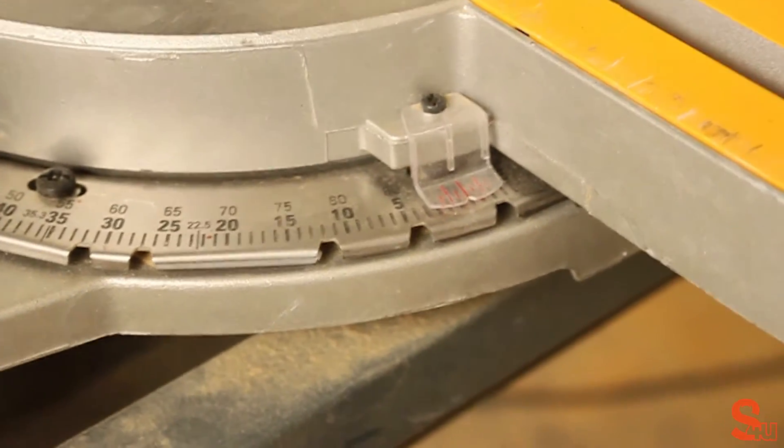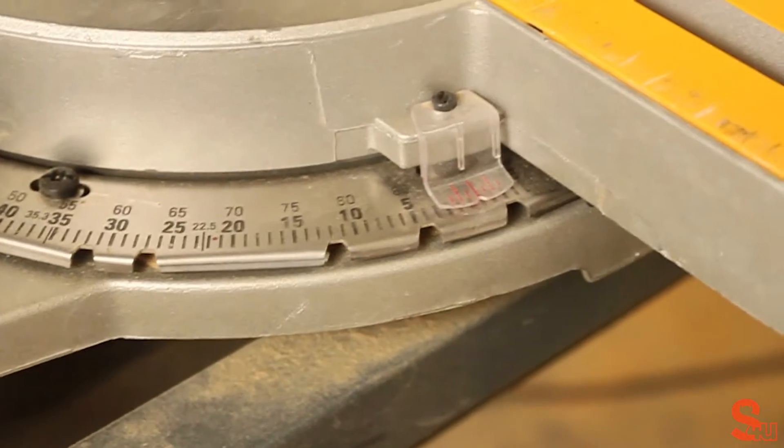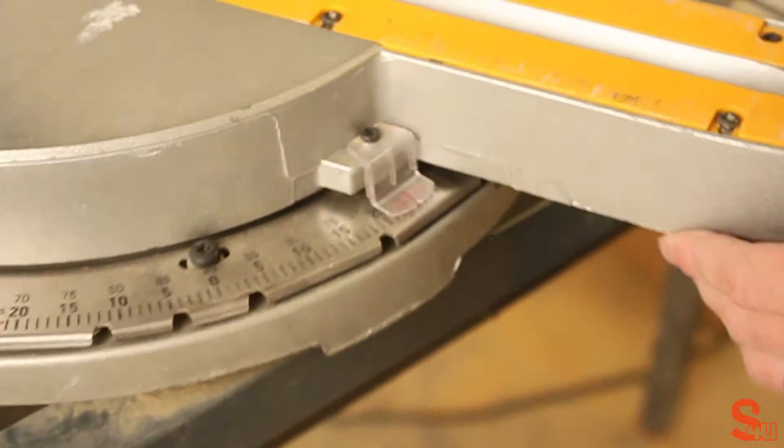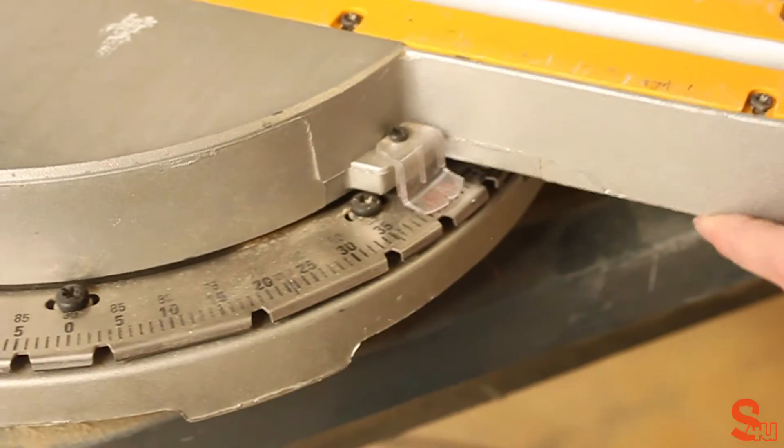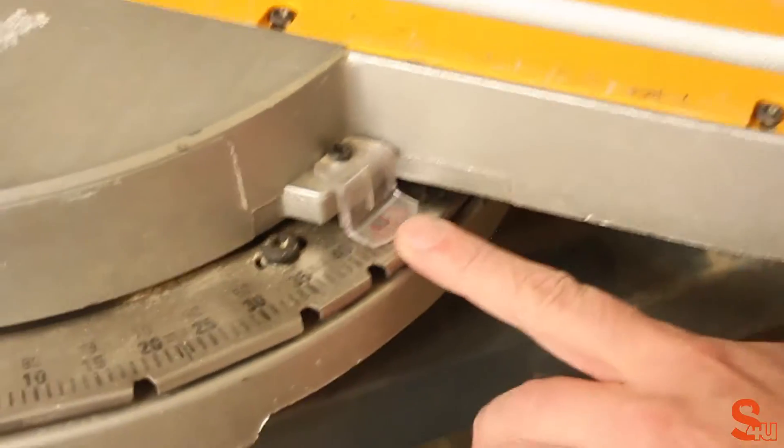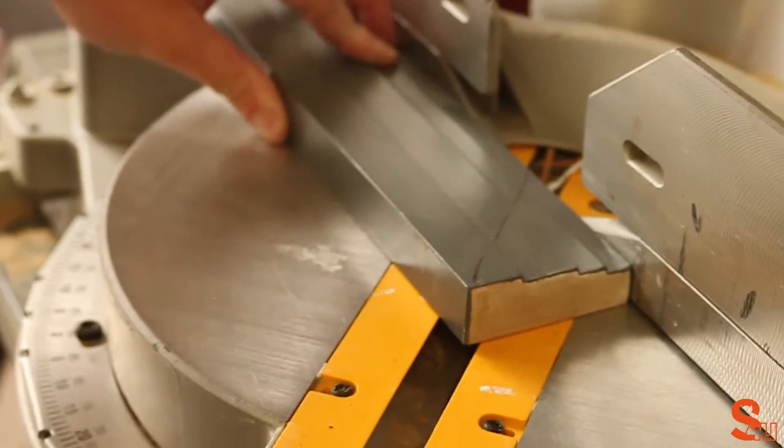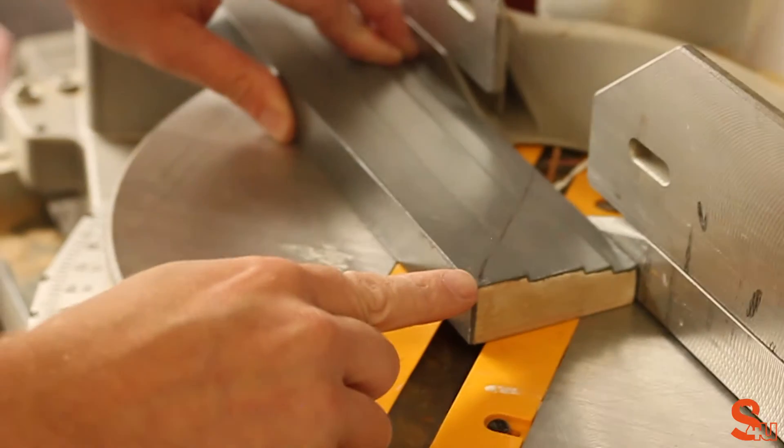Again, we need to set our mitre saw to 45 degrees. This time it's the opposite way, so we follow that line and make the right cut. And then we just need to make that cut for the head piece.